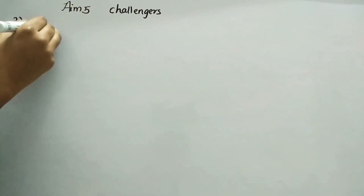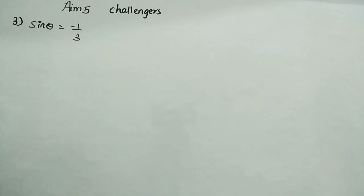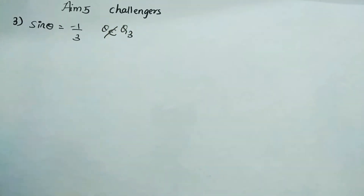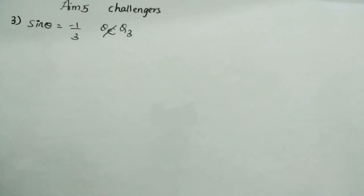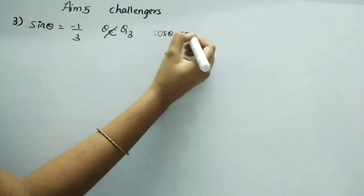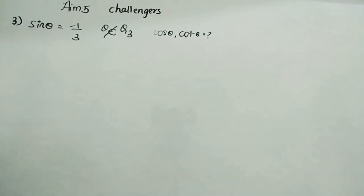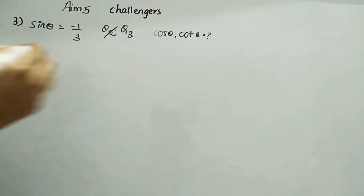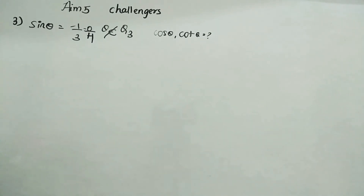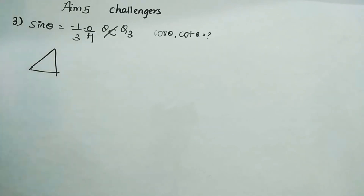Third question: if sin θ equals minus 1 by 3, and theta does not lie in the third quadrant, we have to find the values of cos θ and cot θ. Since sin θ is opposite by hypotenuse, we draw a right angle triangle to work with these values.